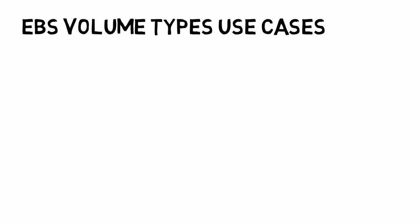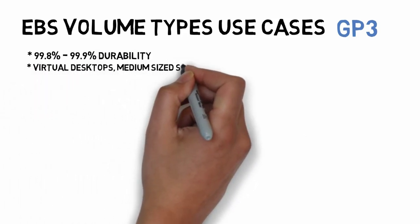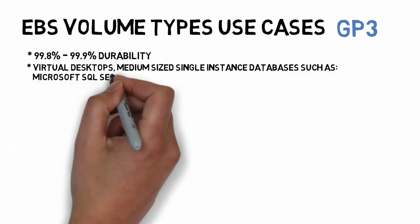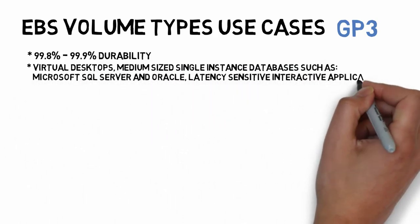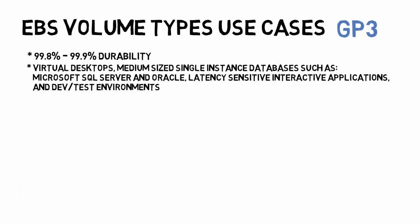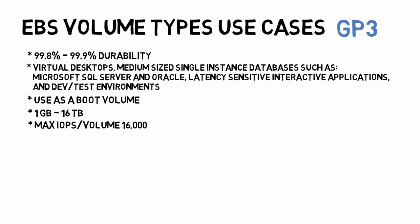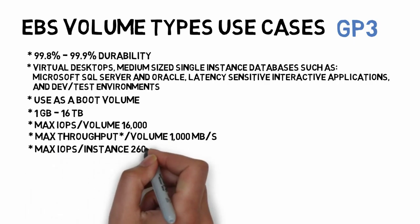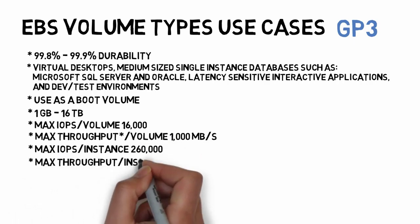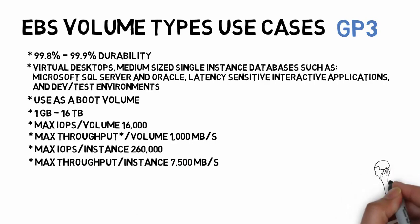EBS volume types use cases for GP3. The durability is 99.8 to 99.9%. It is used for virtual desktops, single instance databases such as Microsoft SQL Server and Oracle, latency-sensitive interactive applications, and dev and test environments. It can also be used as a boot volume. The minimum size is 1 GB and maximum is 16 TB. Max IOPS per volume is 16,000, max throughput per volume is 1000 Mbps, max IOPS per instance is 26,000, and max throughput per instance is 75,000 Mbps.